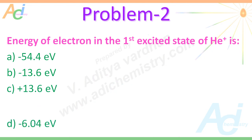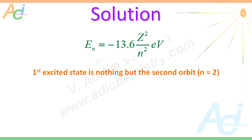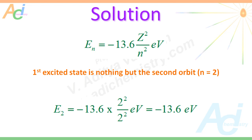The second problem: the energy of electron in the first excited state of He⁺ is asked. From our equation, the energy is −13.6 Z² / N² eV. The first excited state is the second orbit, so N = 2. For helium, Z = 2 and N = 2, so the energy is simply −13.6 eV.